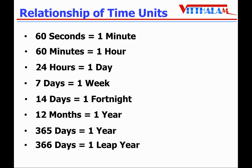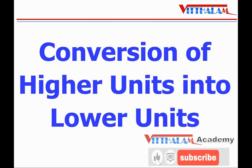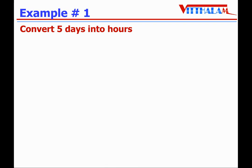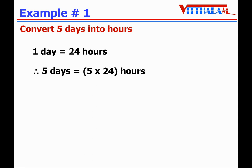Now let's understand conversion of higher units into lower units. Let's take an example: convert 5 days into hours. We know one day equals 24 hours, therefore 5 days equals 5 multiplied by 24 hours. 5 times 24 is 120, so 5 days equals 120 hours.